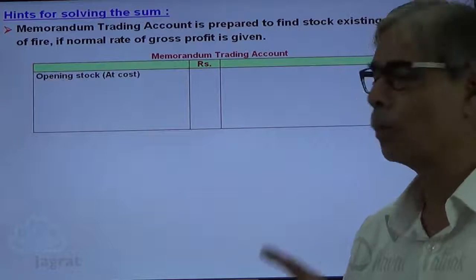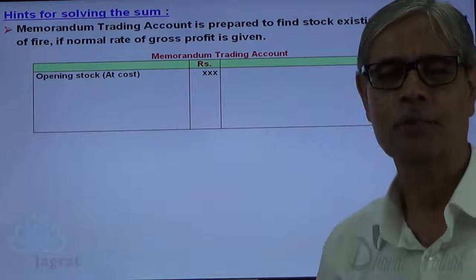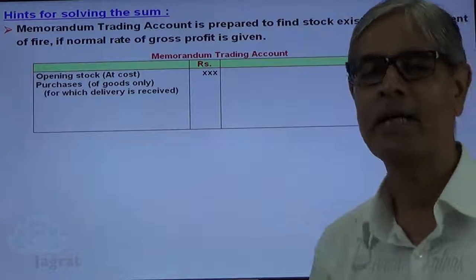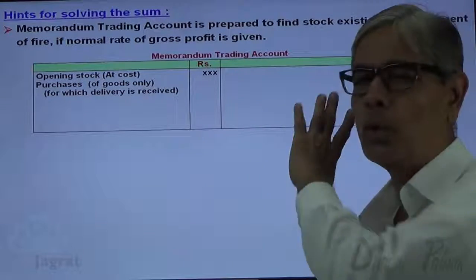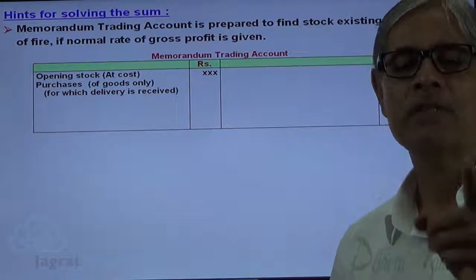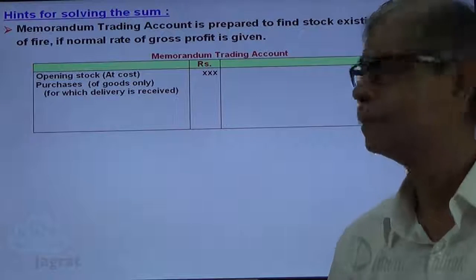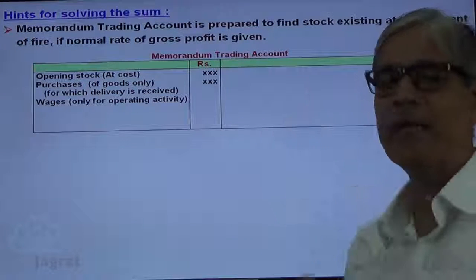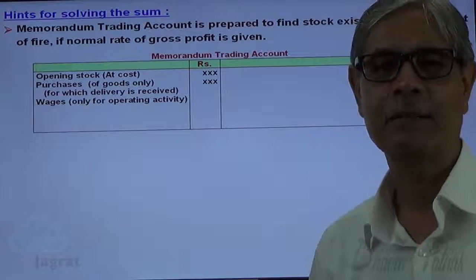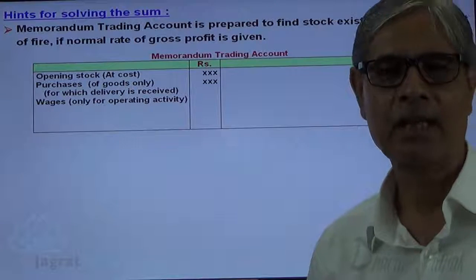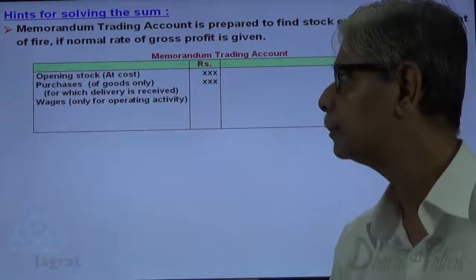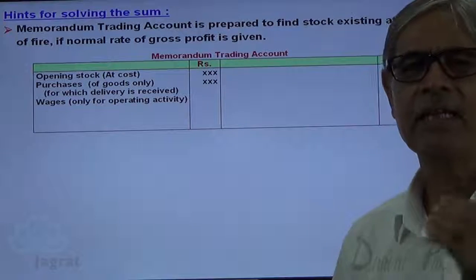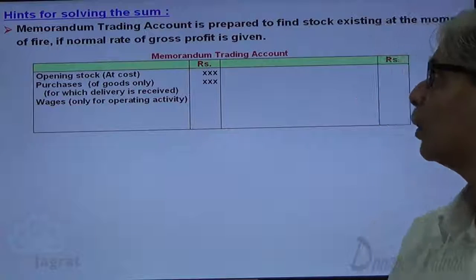The memoranda trading account starts with opening stock, which is always recorded at cost. Only purchases of goods are recorded here — because we have taken insurance for stock. Similarly, wages only for operating activity, carriage inward, and wages for material handling are to be taken care of. Purchases of goods recorded are only those for which delivery has been received.